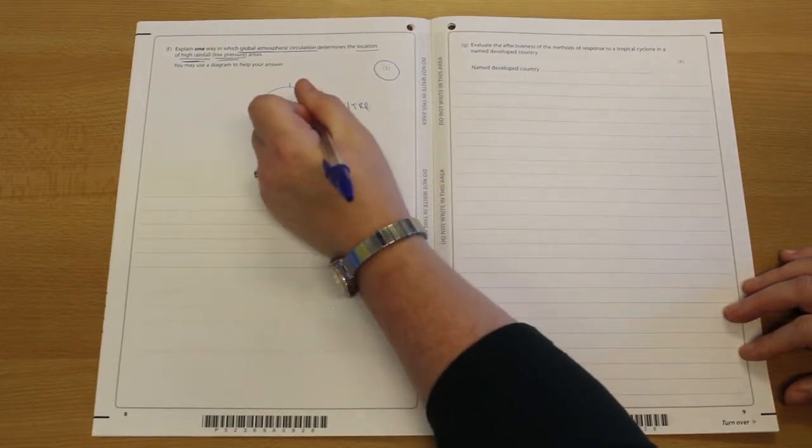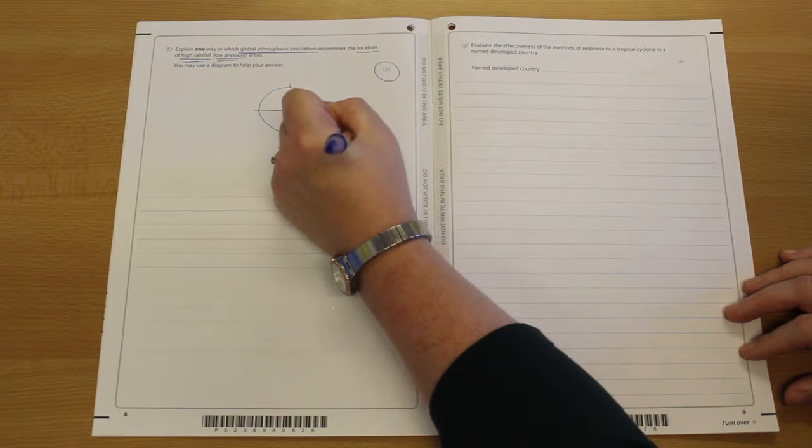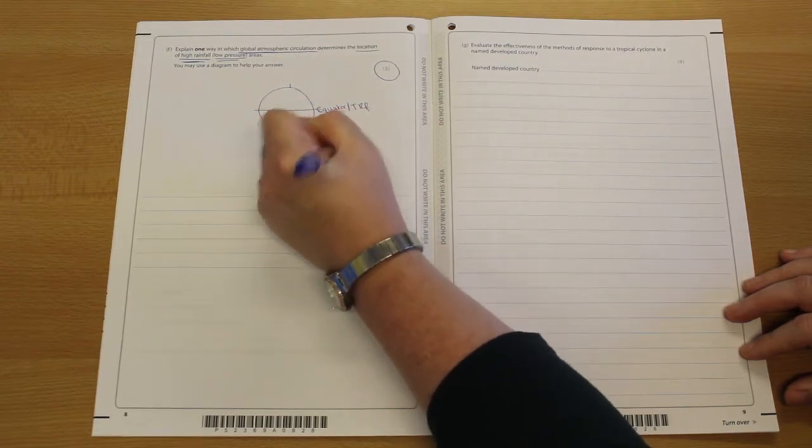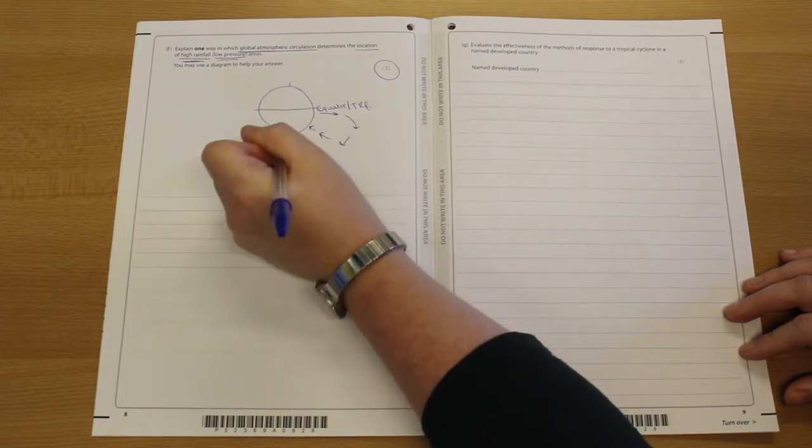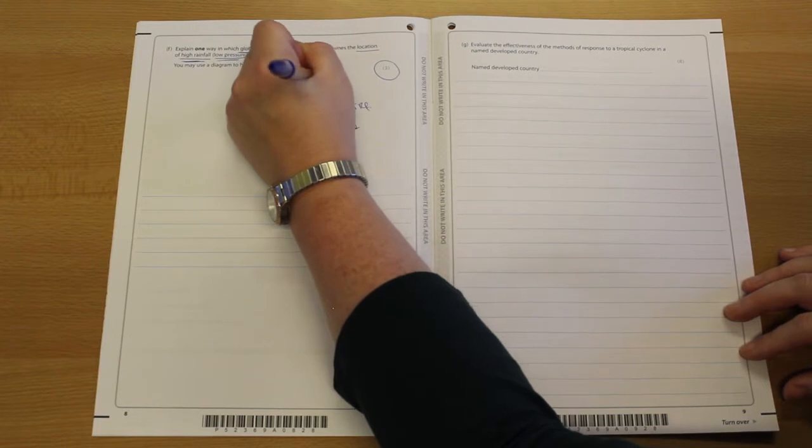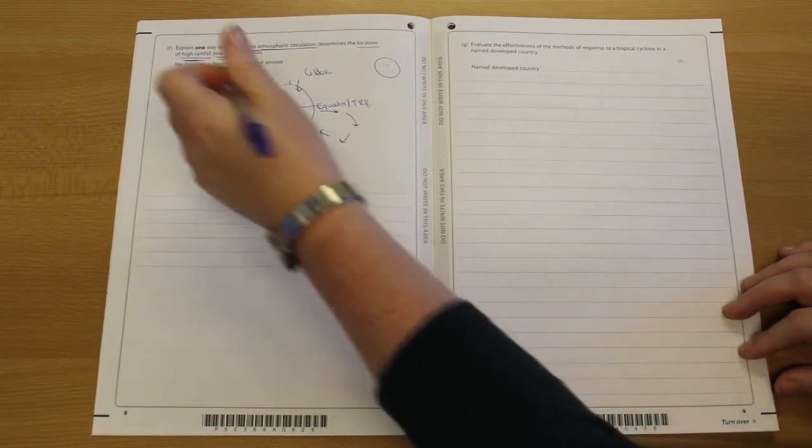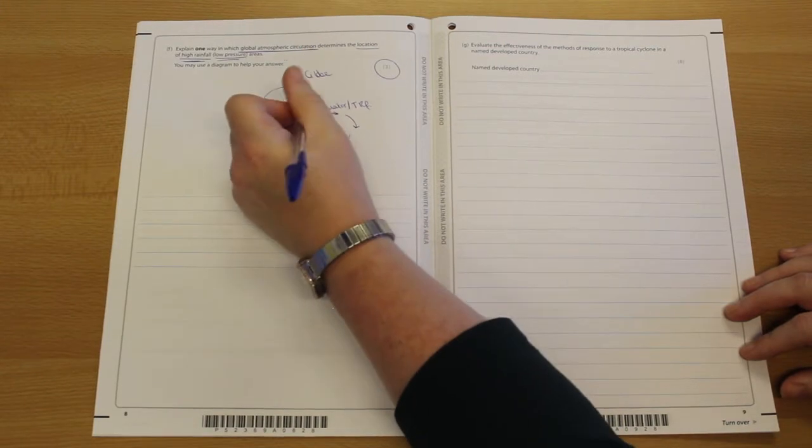A clearly labelled diagram, which is what I'm going to attempt to draw now, or start to draw now, is actually going to explain what you need to. Now, by clearly labelled, it's going to have to have things that point out what things are. And you can see on mine, I've just labelled the equator, I've just labelled the globe.